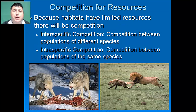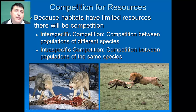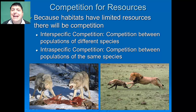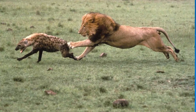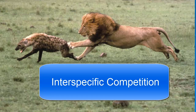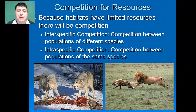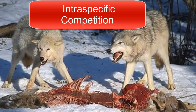Competition occurs because habitats have limited resources, and so the various species will compete over those resources for survival. There are two basic types of competition: interspecific competition and intraspecific competition. Interspecific competition occurs between populations of different species, like lions and hyenas competing for a shared resource of some prey. Intraspecific competition is competition between members of the same species, so two wolf packs competing over a downed animal.